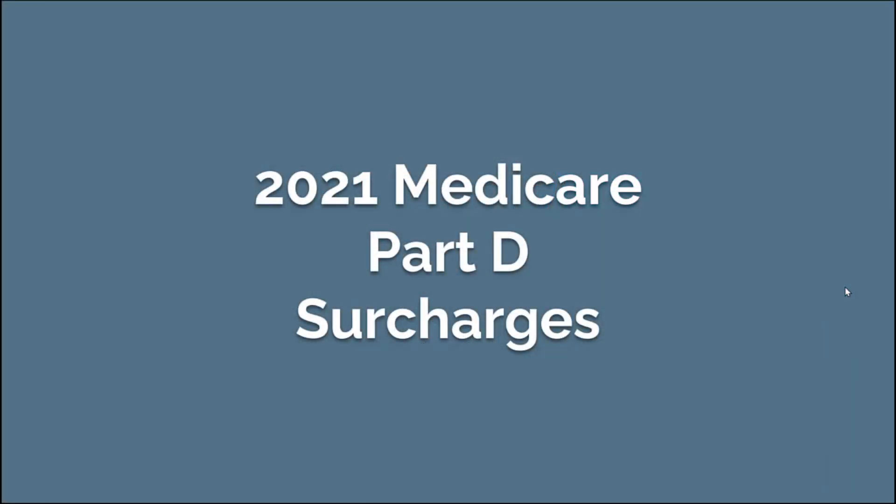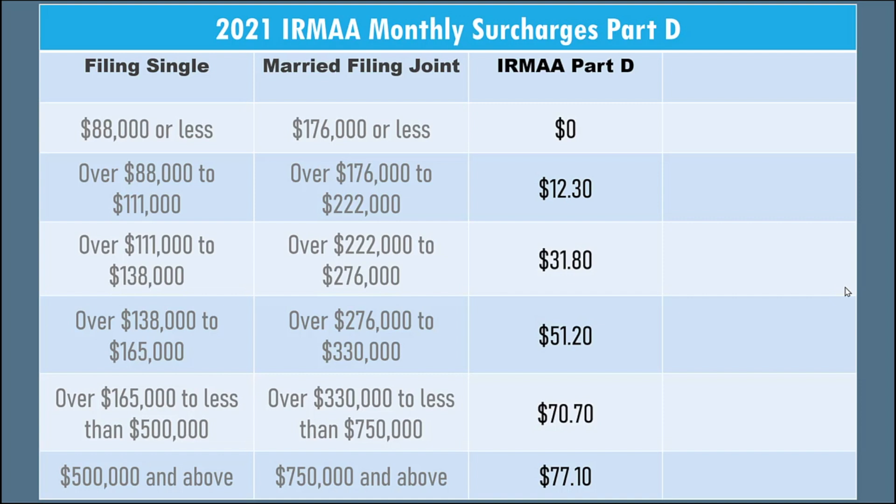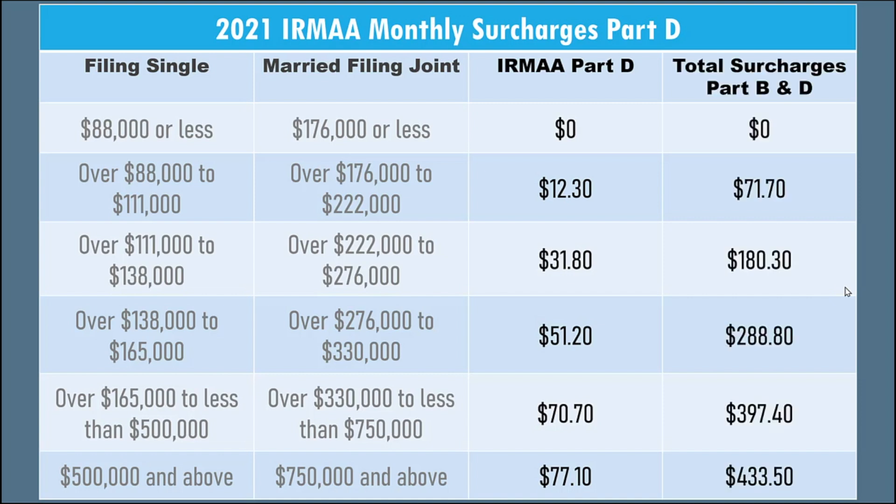The thing to keep in mind is that if you experience these surcharges, they're going to reevaluate it each year based on the next year's modified adjusted gross income. And so it's not going to be necessarily a long-term thing if it comes from a spike. In 2021, the Part D surcharges look like this. And then if we look at the total surcharges for Parts B and D, these are the additional amounts that would go on top of the base premium.